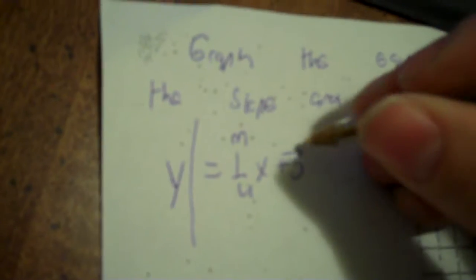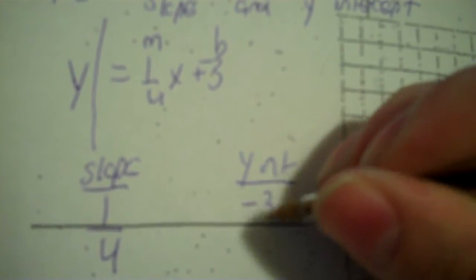y equals 1/4 x minus 3. Make a wall on the y side — make sure the y is by itself. If it is, the number in front of x is your m, and the other number is your b. That is your slope and y-intercept respectively. So slope is 1/4 and the y-intercept is negative 3.